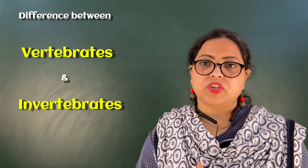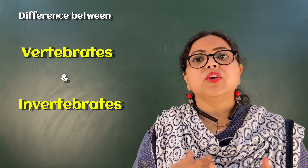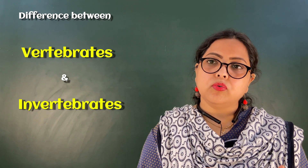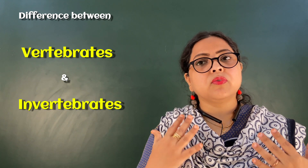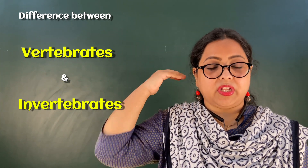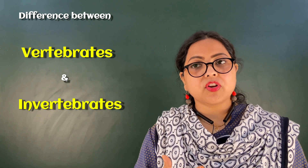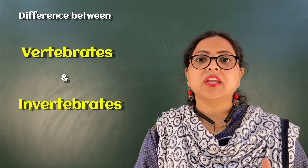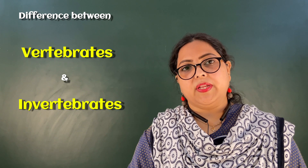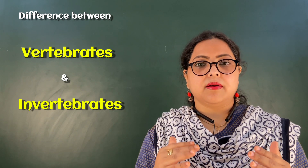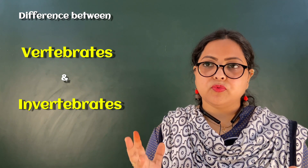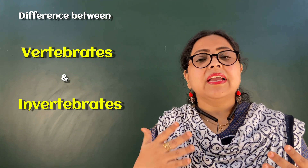Another point of difference is that in vertebrates the nerve cord is hollow and is present on the dorsal side of the body, whereas in invertebrates the nerve cord is solid and is located on the ventral side of the body.